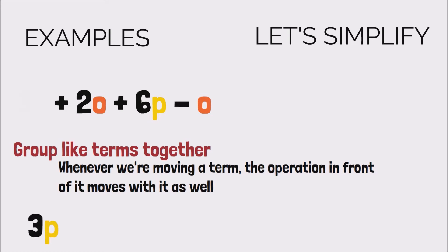And when we're moving the 6P, we move the operation in front of it, which is the plus, so it becomes 3P plus 6P. Now we write plus 2O, and then we have minus O. So now we have our like terms, P's, and our other like terms, O's, directly beside each other.